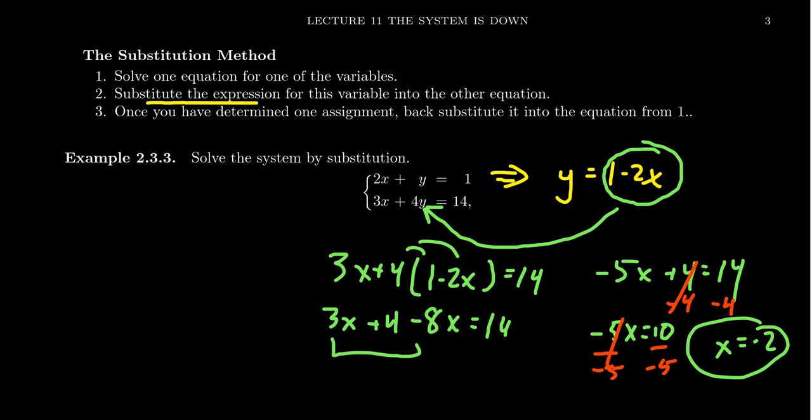We're going to plug this value of x, negative 2, into the first equation. But better yet, we're going to plug it into this expression right here. Because after all, we already have y equals something in terms of x. If you plug in the known x value, we're going to see that y equals 1 minus 2x, but x is negative 2. And so we get 1 plus 4, which is equal to 5.